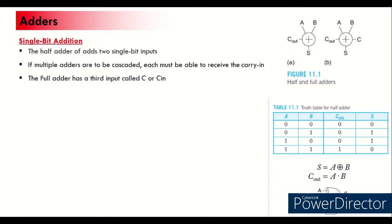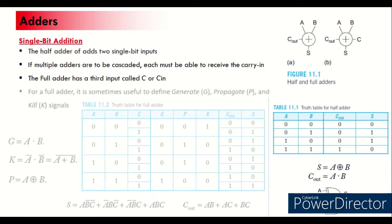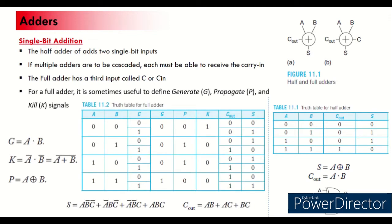Half adder and full adder are the two important adder blocks we are going to use regularly. The half adder adds only two bits, A and B; sum and carry are the outputs. Sum is equal to A XOR B, and carry is A AND B. This is the simple implementation of the half adder.